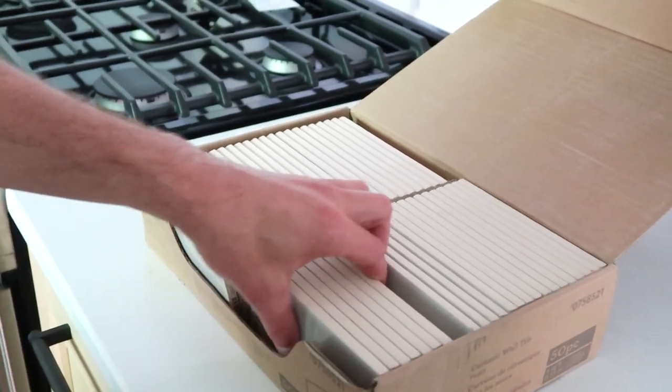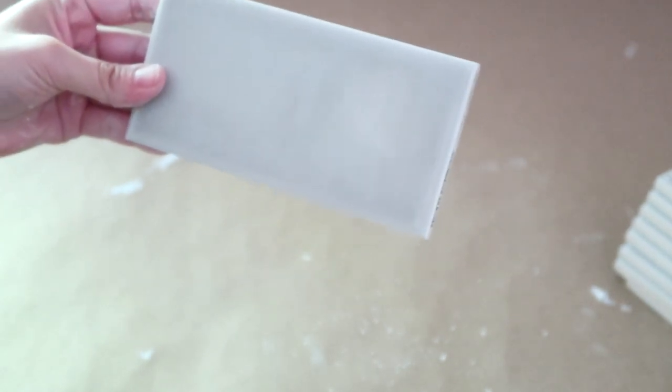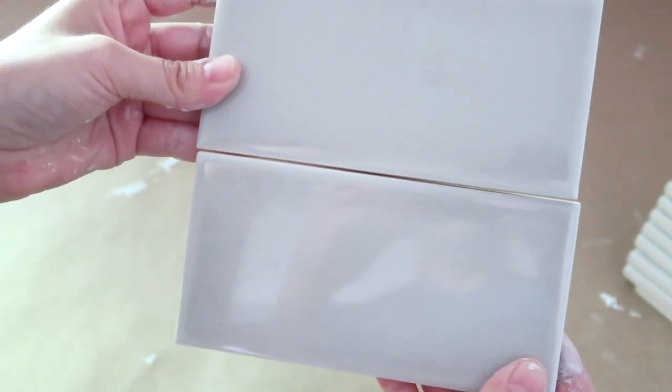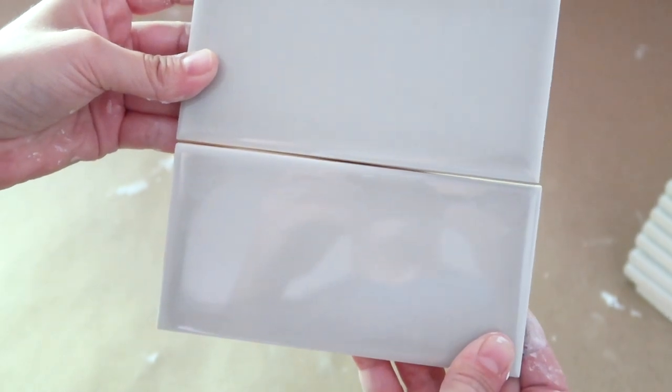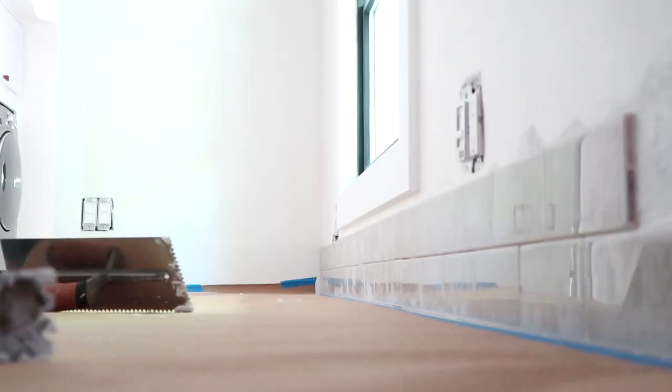Another thing you might notice is we're using three by six inch subway tile. Subway tile has a natural easement on the edges and when you put the tile against one another there's a very small space where grout can fit right in. We prefer the look of a very thin grout line so we don't use spacers in this case.